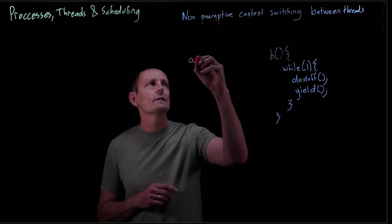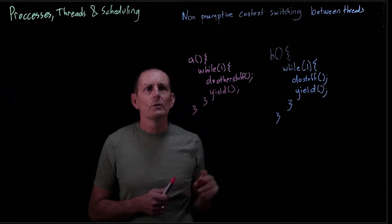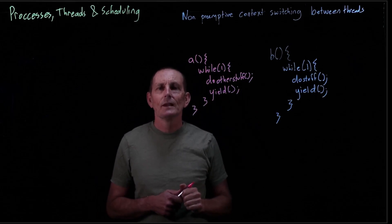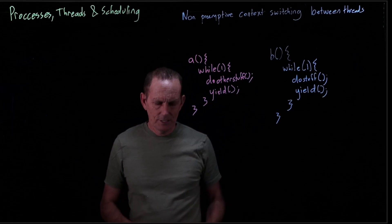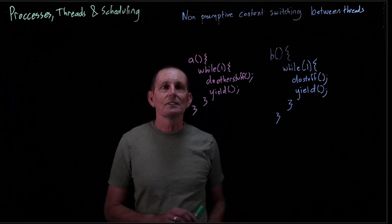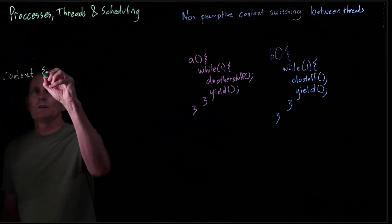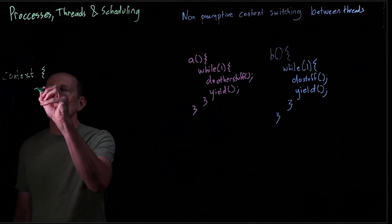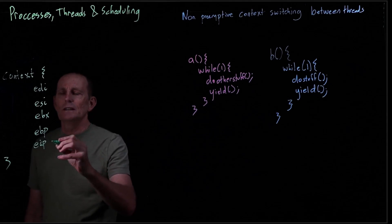And we'll have another thread A, which is very similar — it loops and does other stuff. How are we going to represent a non-running thread? We'll do that using a context, basically the saved registers. So we're going to define a context structure, and we'll store within the structure five registers: EDI, ESI, EBX, EBP, and EIP.